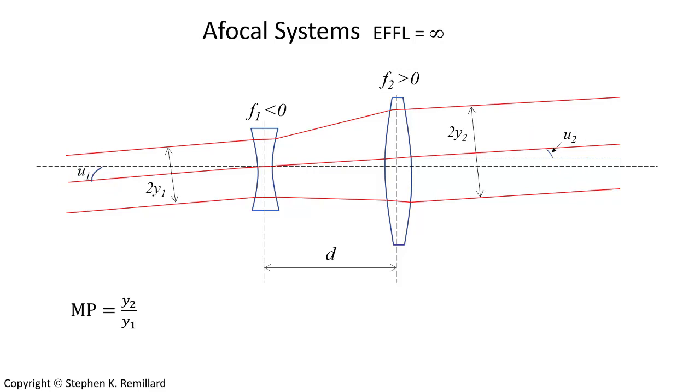The intuitive definition of magnification is Y2 divided by Y1, but it can also be written in terms of the focal lengths, and it can be written in terms of those angles. Y2 over Y1 equals U1 over U2, and that is 1 divided by the angular magnification.